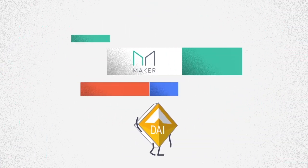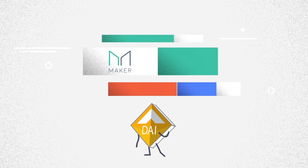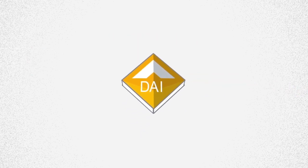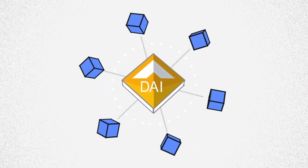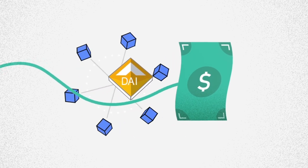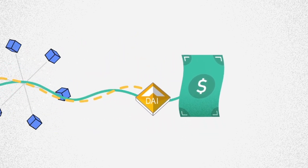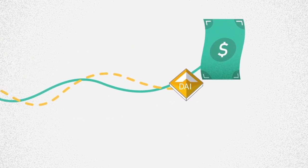Now, MakerDAO is solving this problem with the introduction of DAI. Just like Bitcoin, it's a currency that is securely verified by the blockchain. But unlike Bitcoin, DAI is engineered to track the value of the US dollar.